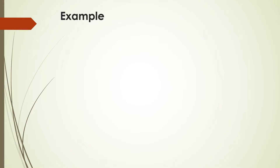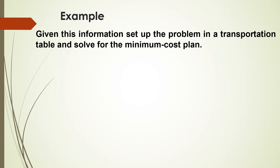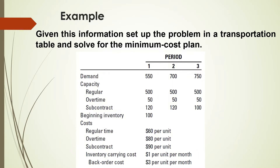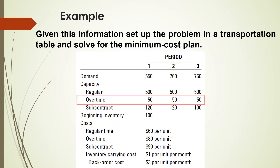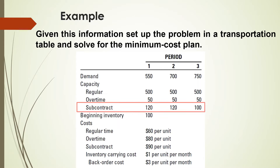Let us now practice the construction of aggregate planning using the transportation-type programming model by solving an example. Given this information, set up the problem in a transportation table and solve for the minimum cost plan. The information includes the demand for three periods. The capacity is 500 units during the regular time for each period, 50 units during the overtime, and by the subcontractor: 120, 120, and 100 units for periods 1, 2, and 3 respectively.